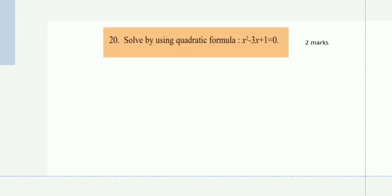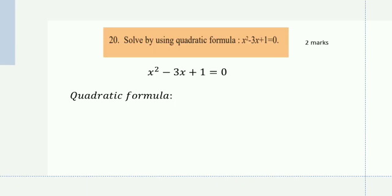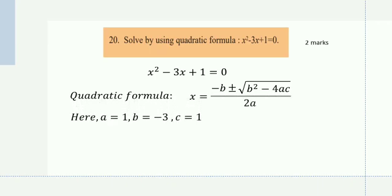Solve by using the quadratic formula: x² − 3x + 1 = 0. The given equation is x² − 3x + 1 = 0. The quadratic formula is x = (−b ± √(b²−4ac)) / 2a. Here a = 1, b = −3, c = 1.